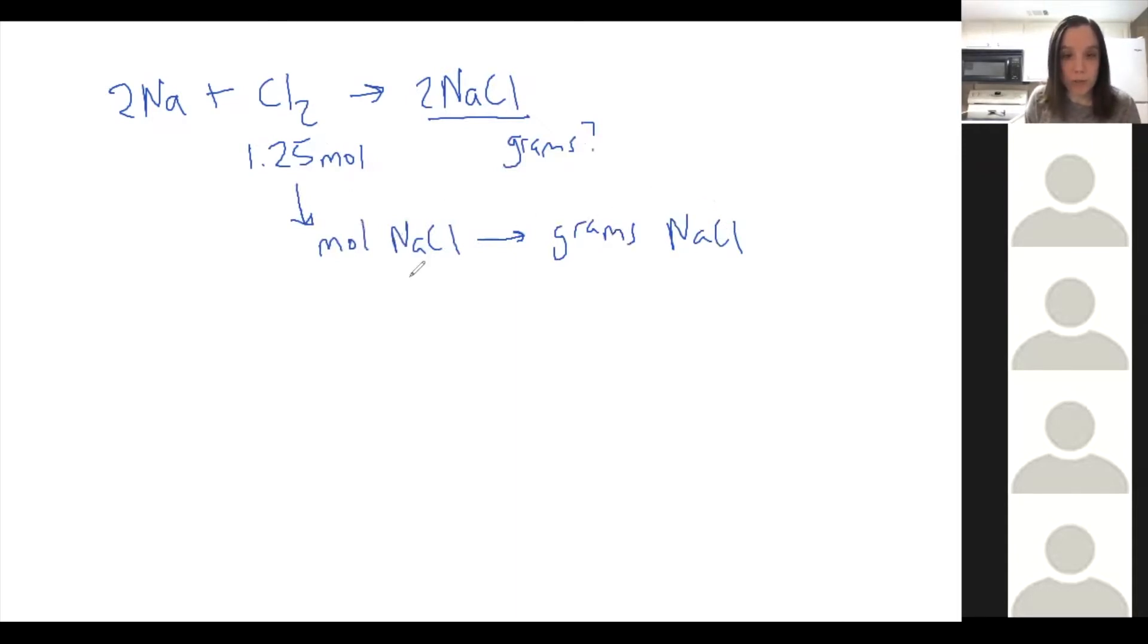So yesterday we learned how to go from moles to moles within a reaction. We're told that we're using 1.25 moles of Cl2. We want to know how many moles of NaCl will be produced. So the ratio would have to have chlorine in the bottom, and there's no number in front, so that's a 1. 1 mole of chlorine for every 2 moles of NaCl. We'll cancel out chlorine. 1.25 times 2, we get 2.50 moles of NaCl.